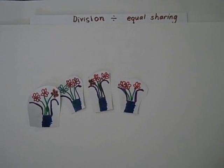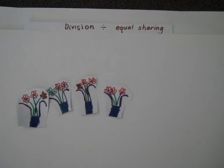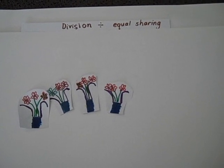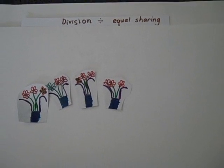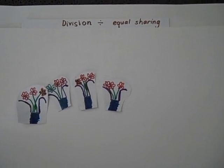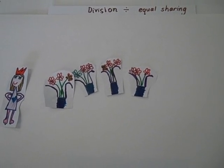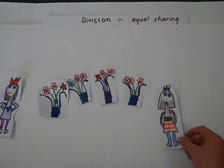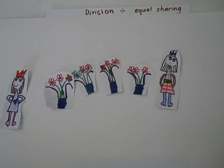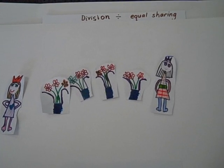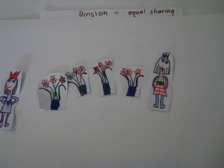We're here today to tell you about division that equals sharing. Once there was a girl and she came out to a garden and she had four flowers in pots. And then her friend came and asked her if she could have two flowers and so I said okay.